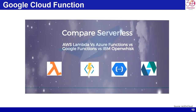Google Cloud Functions is a lightweight compute solution for developers to create single-purpose, standalone functions that respond to cloud events without the need to manage a server or runtime environment. Google Cloud Functions provides the same functionality as Amazon Web Service Lambda, Microsoft Azure Functions, and IBM OpenWhisk.